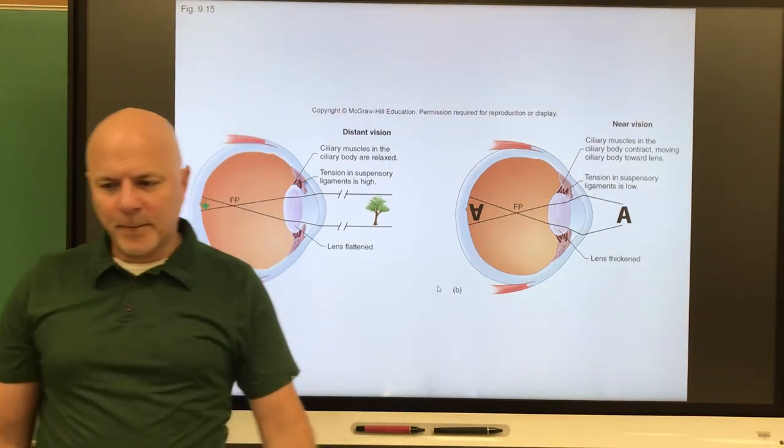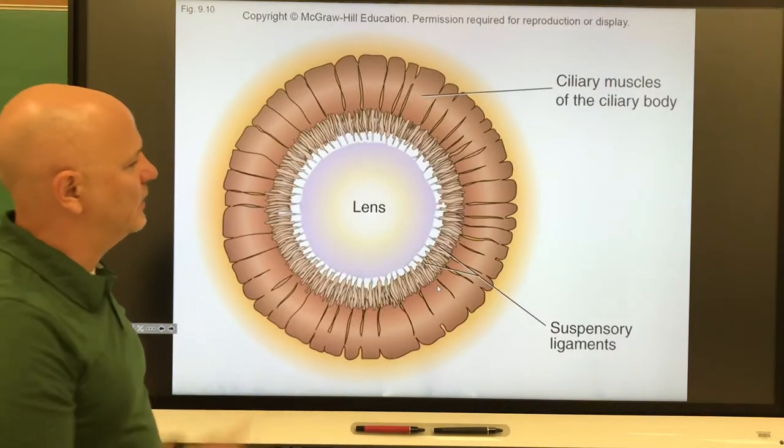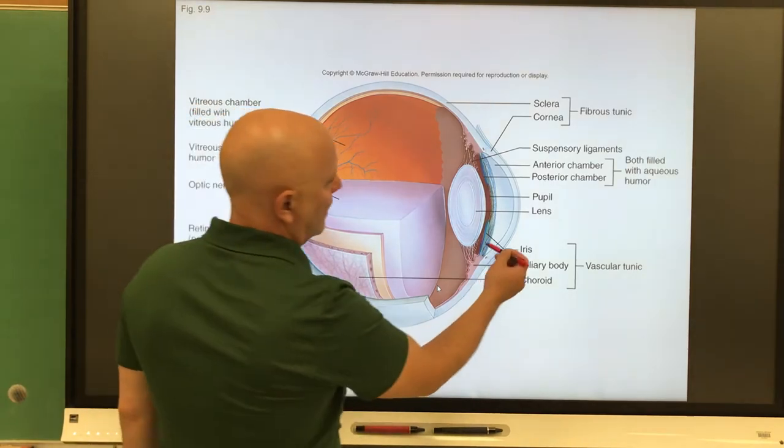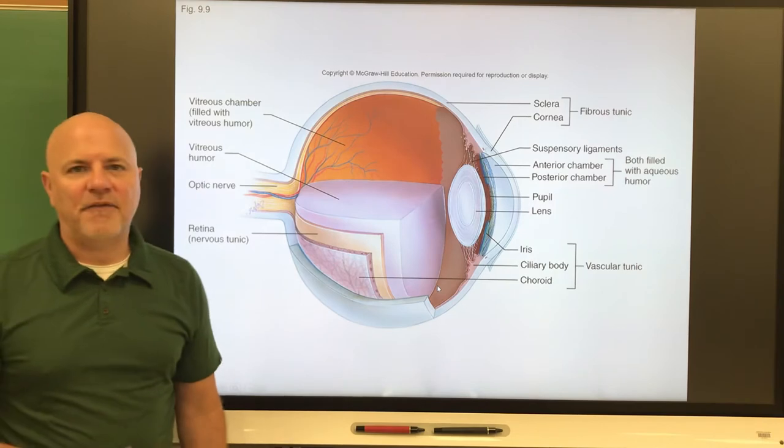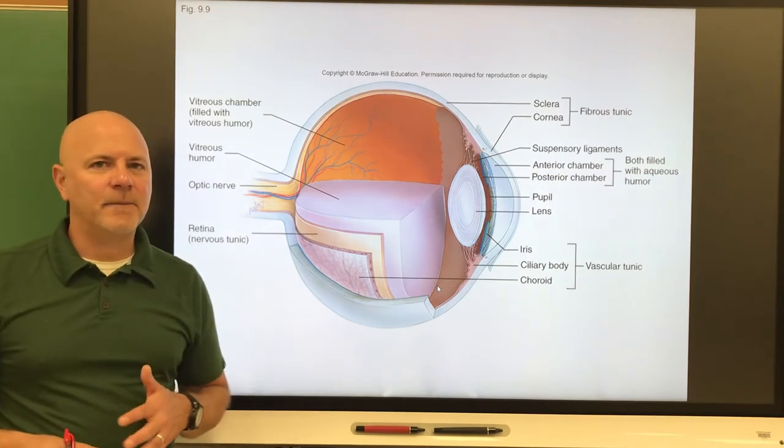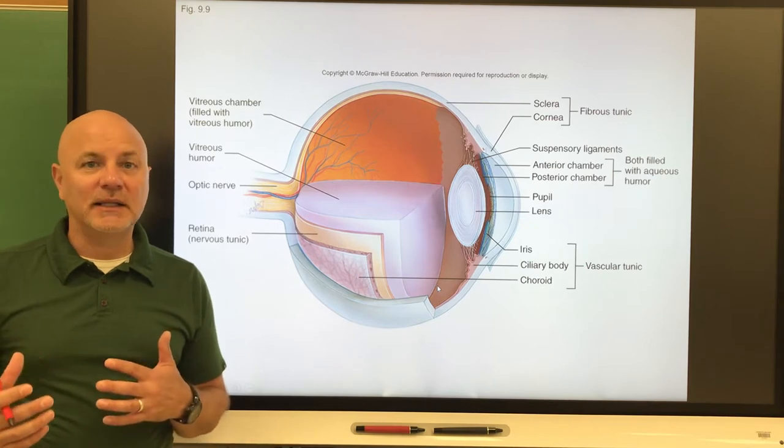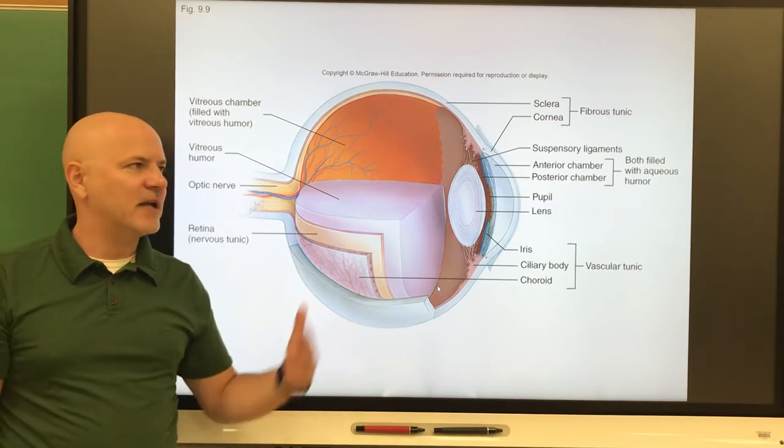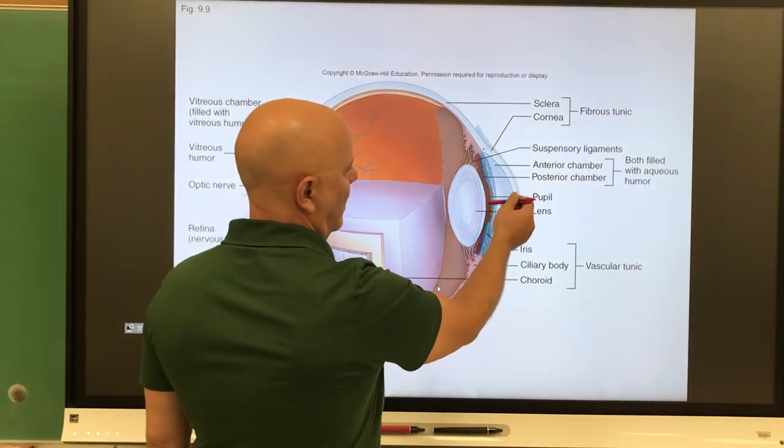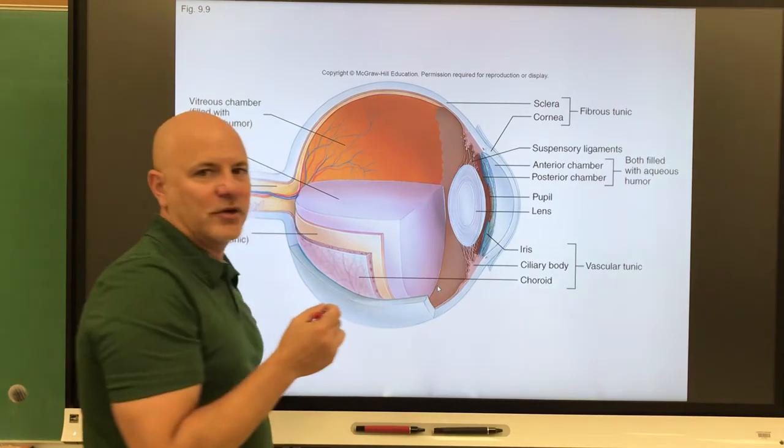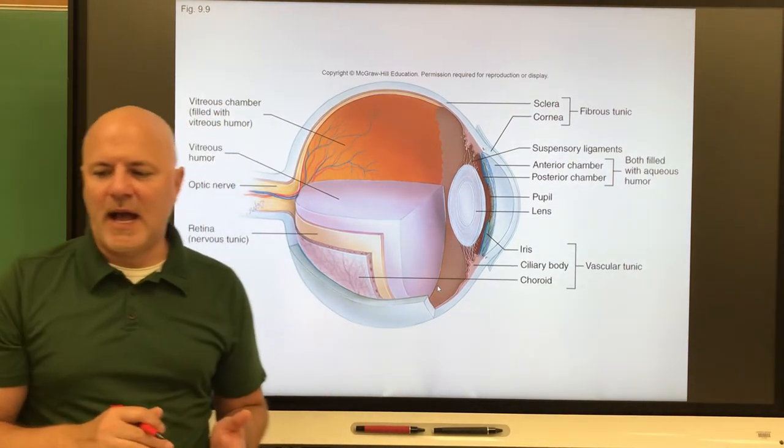Next is the iris. If I go back to this picture here, this right there is the iris. The iris is a thin diaphragm that is the colored portion of the eye. A diaphragm regulates how much light enters an object, in this case how much light enters the eye. Right in the middle of the iris, the color portion of our eye, is our pupil. This is a circular opening in the center of the eye or the center of the pupil.